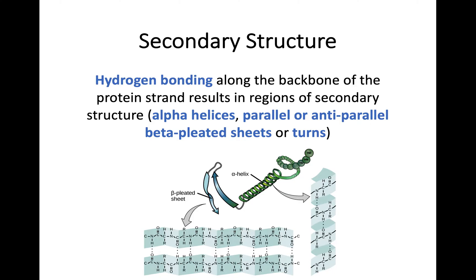Secondary structure is something touched on in Higher Biology. Hydrogen bonds work along the backbone of a protein and pull it into different shapes. These are usually formed into alpha helices — the spiral helix structures — or beta pleated sheets, which are folded into wave-like sheets, or turns. Remember that secondary structure uses hydrogen bonding to form these shapes.